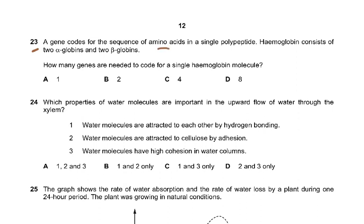A gene codes for the sequence of amino acids in a single polypeptide. Hemoglobin consists of two alpha and two beta subunits — how many genes are needed? Alpha globin and beta globin have different primary structures, which is why they are named differently. However, the two alpha globins share the same primary structure. So only two genes are needed — like a brownie recipe that can produce multiple copies — making the answer B.